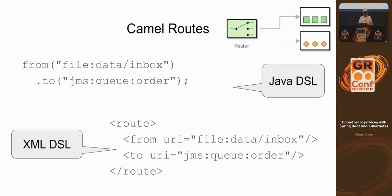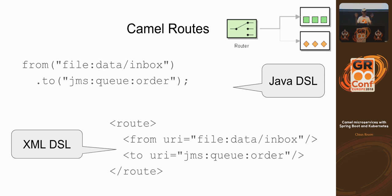What is a Camel route? Here is a very basic, simple example. You have two systems — a file system and a message broker using JMS — and you just want to push those files to the message queue. Straight from and to, nothing else. You can just say 'from file' and then the directory name, 'to JMS' and then the name of the queue. Similarly, you can do the same implementation in XML. They are very similar.